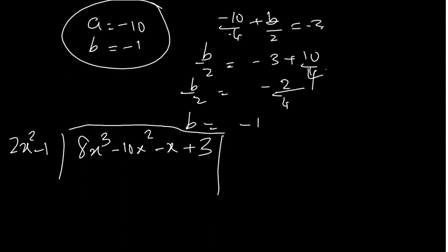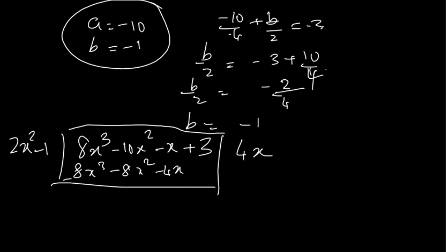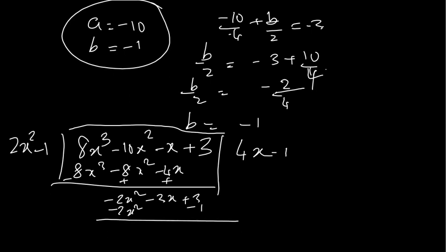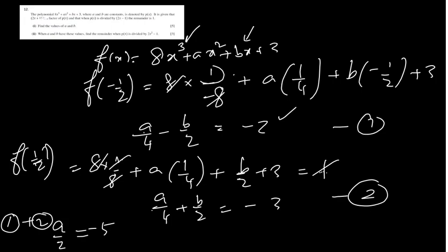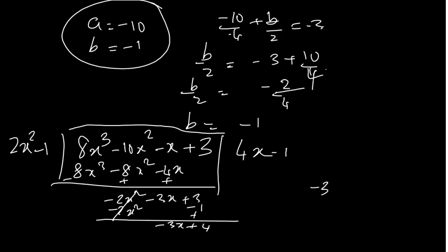Dividing 8x cubed minus 10x squared minus x plus 3 by 2x squared minus 1: first term gives 4x. Then 8x cubed minus 4x, giving minus 10x squared minus 3x plus 3 after subtraction. Next term is minus 5, giving minus 10x squared plus 5, so minus 3x plus 3 minus 5 gives remainder minus 3x plus 4. The remainder when p(x) is divided by 2x squared minus 1 is minus 3x plus 4.